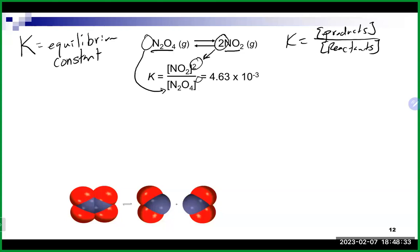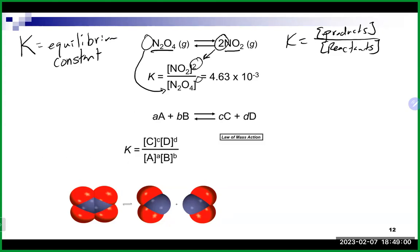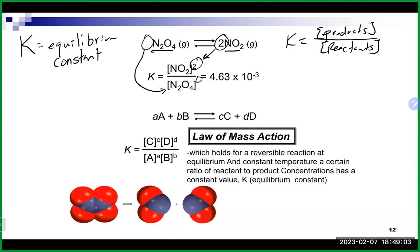Note that capital K is the equilibrium constant, while lowercase k is the rate constant from kinetics — they are different. One nice thing about K is that it is just a number with no units. To write the equilibrium expression, we take products over reactants and use the balanced equation coefficients as exponents. This gives us our K value.